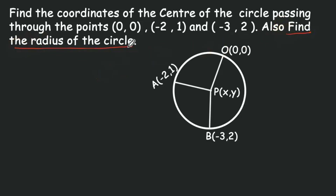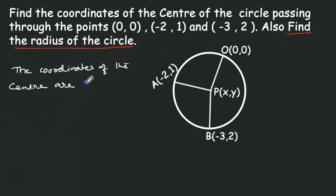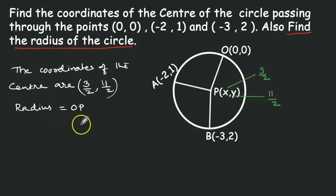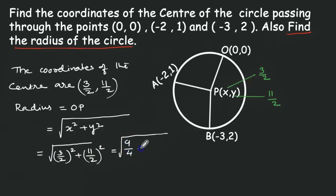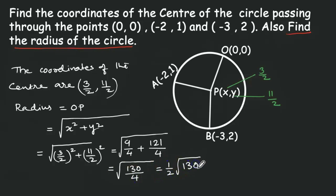The second part of the question is to find the radius of the circle. The coordinate of the center is (3/2, 11/2). The radius equals OP equals root of x squared plus y squared. Substituting x equals 3/2 and y equals 11/2: root of (3/2) squared plus (11/2) squared equals root of 9/4 plus 121/4 equals root of 130/4, which equals 1/2 times root of 130 square units.